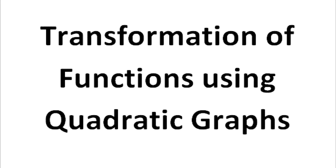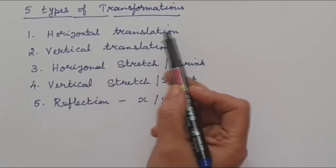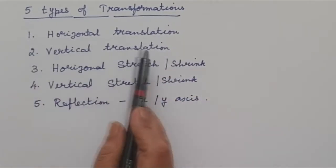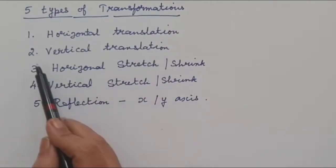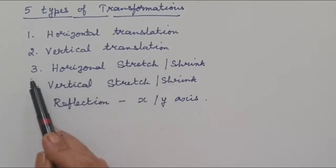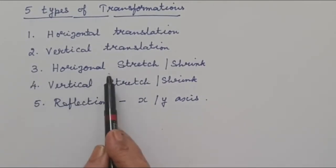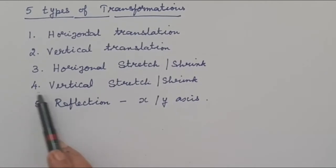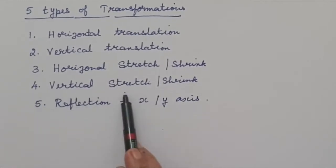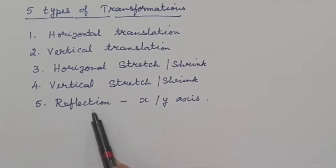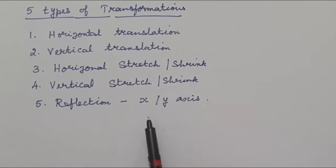Transformation of functions using quadratic graphs. There are 5 types of transformations. The first one is a horizontal translation. The second one is a vertical translation. The third one is a horizontal stretch or shrink. The fourth is a vertical stretch or shrink. The fifth one is reflection in the x-axis and the y-axis.